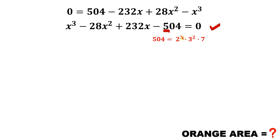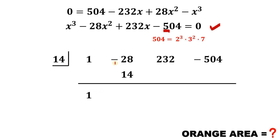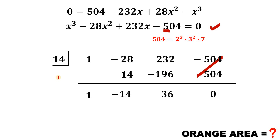We need the factors of 504, which equals 2³ × 3² × 7. Using synthetic division with coefficients 1, −28, 232, −504, and testing x = 14: bring down 1; 1 × 14 = 14; −28 + 14 = −14; −14 × 14 = −196; 232 − 196 = 36; 36 × 14 = 504; 504 − 504 = 0. So x = 14 is a solution and (x − 14) is a factor. The remaining quadratic factor is x² − 14x + 36.